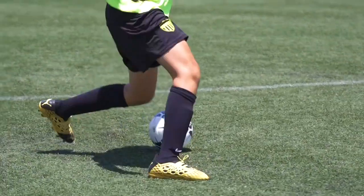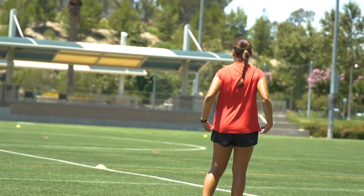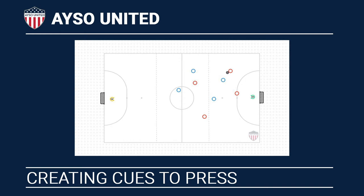The topic of the second activity was to read the pressing cues and know when to delay or to press and regain the ball. So we laid the field out into the different thirds — an attacking, middle, and defensive third — and the objective of the activity was for the defending team to regain possession in the third that they lost the ball in.